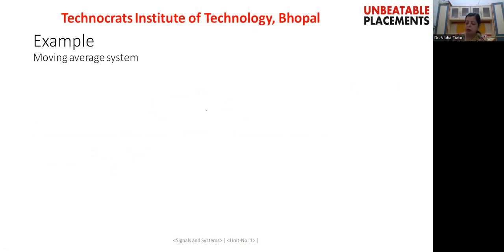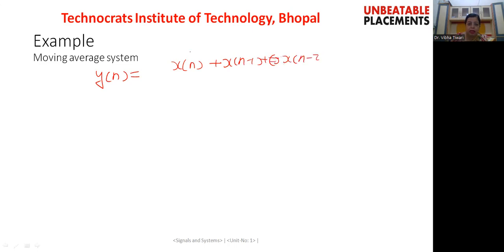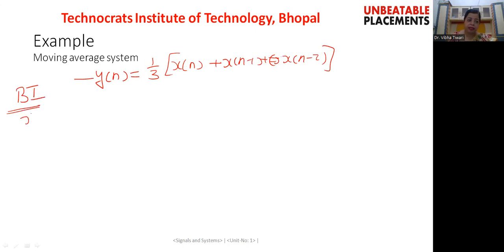Let us check this property for some systems. The first system we consider is the moving average system. The expression for the moving average system is y(n), which equals the average of three consecutive samples: one-third of x(n) plus x(n-1) plus x(n-2). This is the output expression for this system. To this system, let us apply a bounded input, meaning we apply signal x(n) having the highest possible value mx.